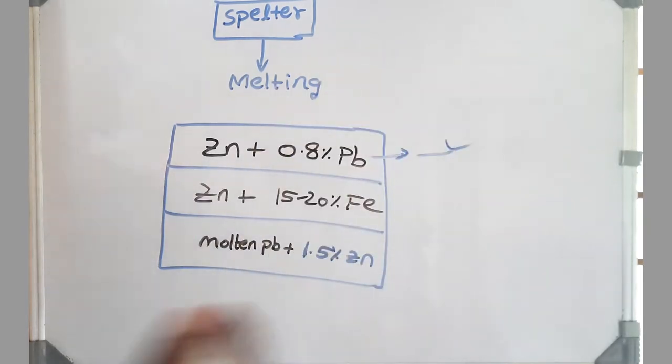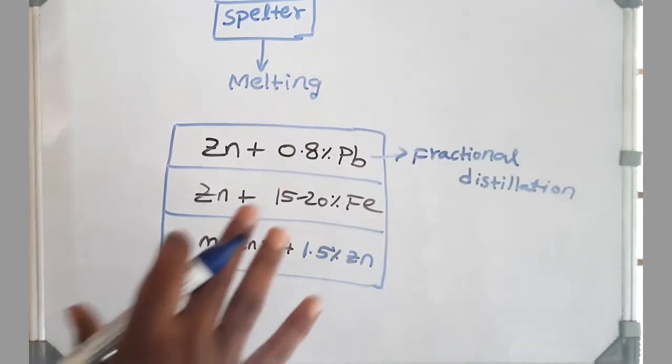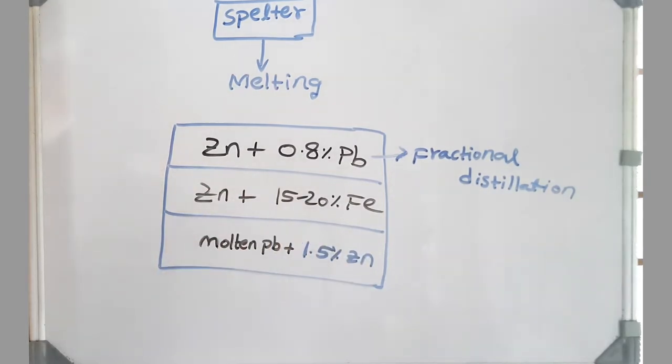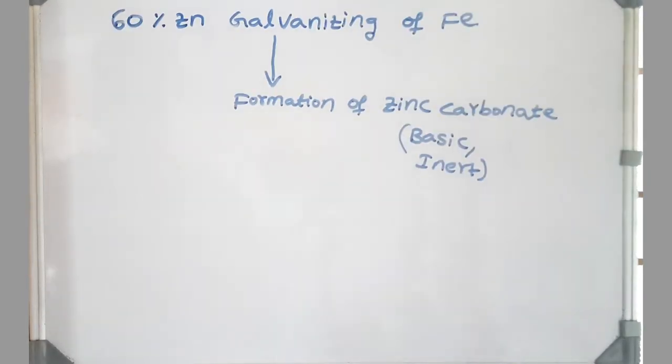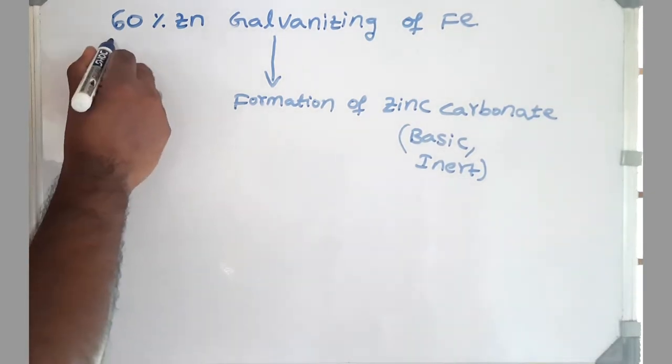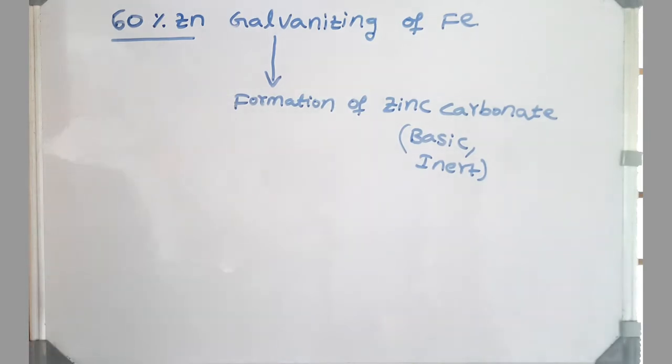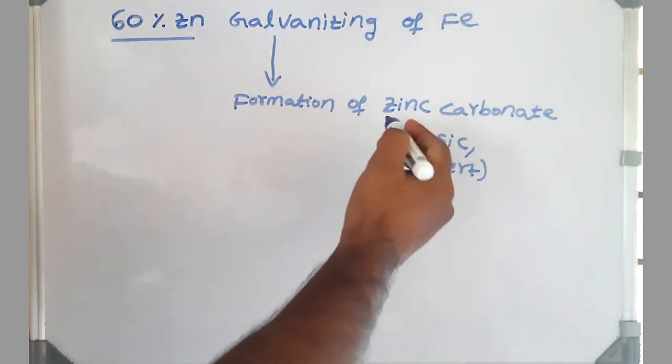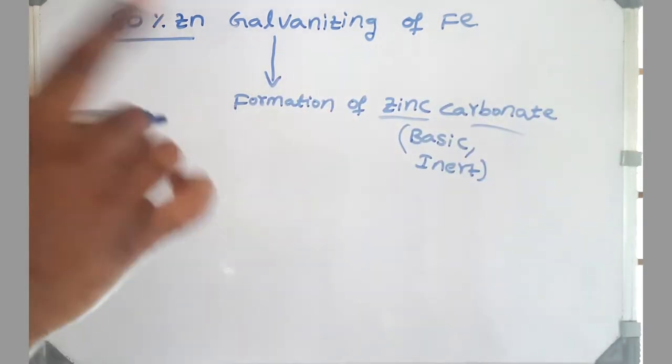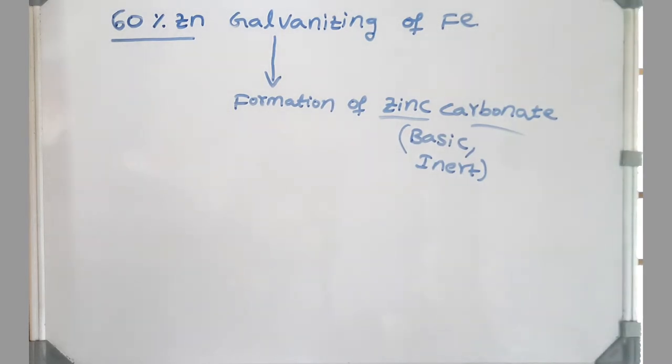The top layer is zinc with 0.8 percentage lead, which is taken and again refined to get pure zinc. Fractional distillation separates zinc and lead. Friends, we know zinc is used for the cathodic protection of iron. Out of 100 percentage, 60 percentage of zinc is purely used for the galvanizing of iron. What is galvanizing, friends? This is a process of formation of zinc carbonate layer on iron surface. This layer is basic and inert and protects iron from a corrosive atmosphere.